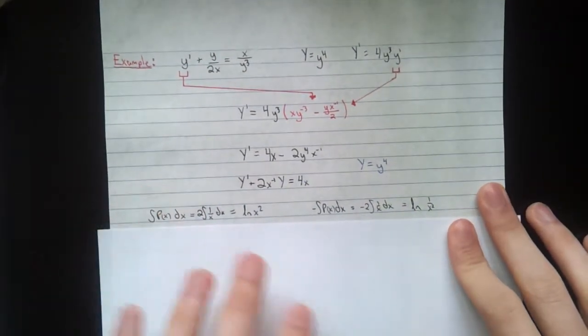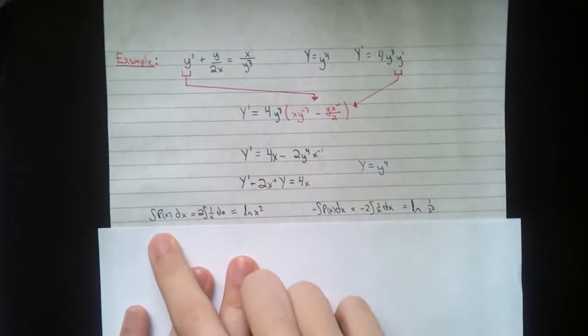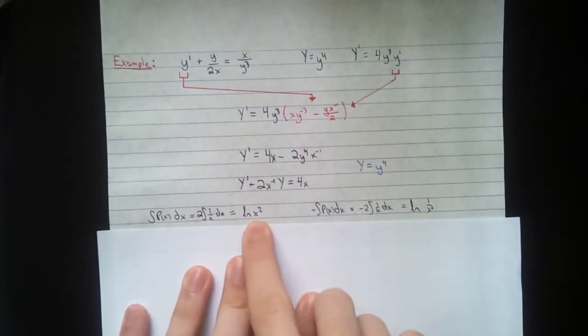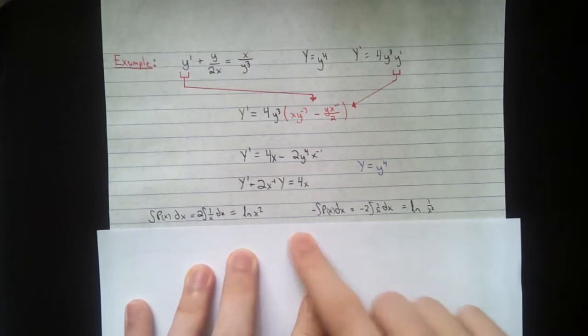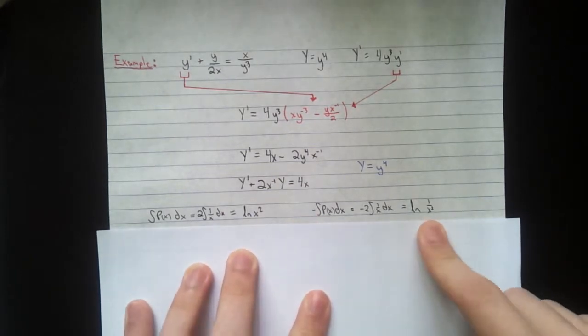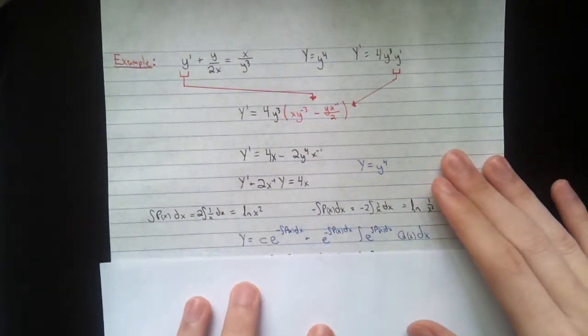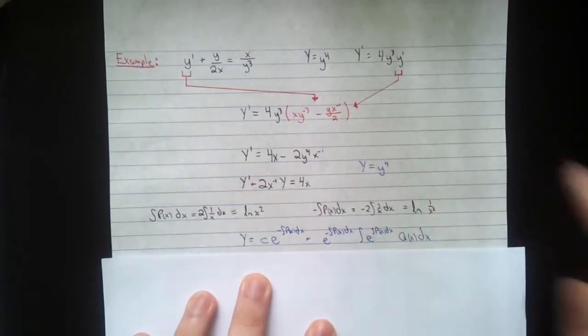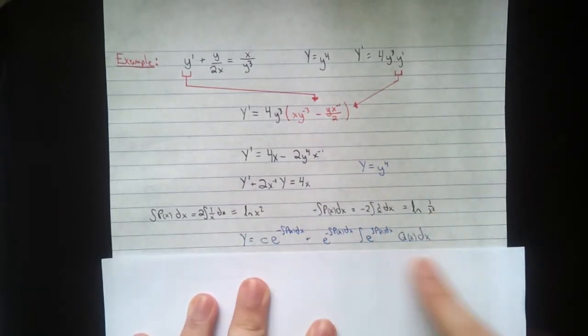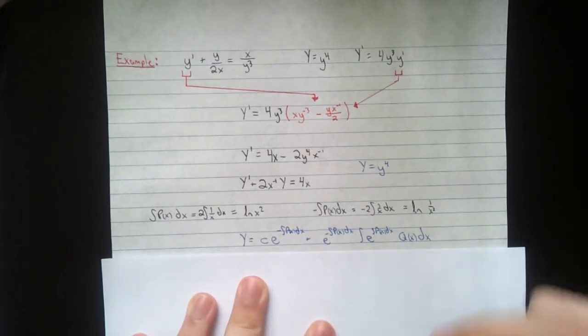So now we're going to solve this. We have integral of p at x dx. That's pretty simple. Natural log x squared. Negative integral. Natural log 1 over x squared. And this is the solution for this style of formula. If you don't remember, I did make a video on this one. I'll put a link to it down below.